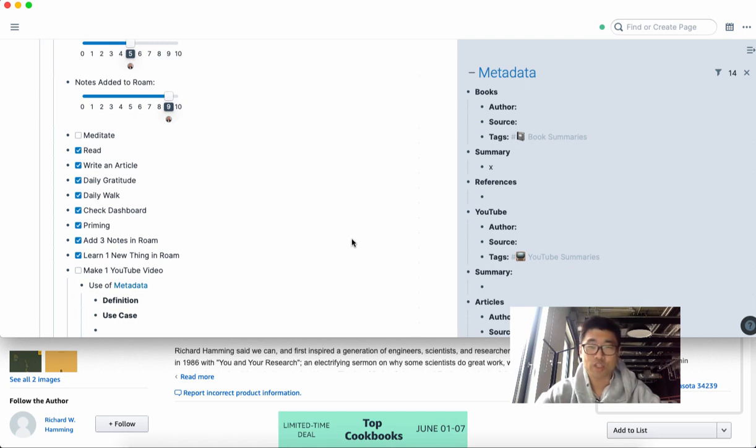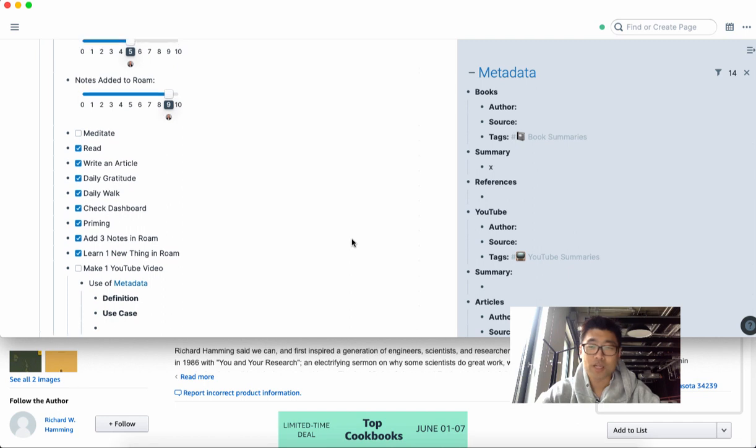be using metadata to structure the inputs that we put into Roam Research. It's a useful way for us to systematically categorize the data that we're working with and to ensure that we're able to find the information that we're looking for when we need it.